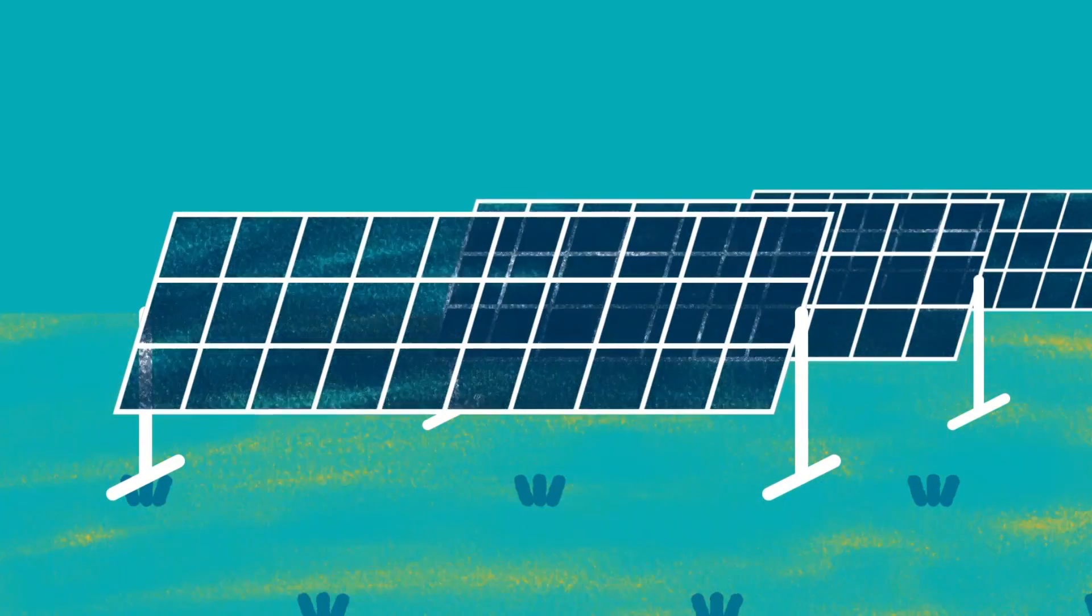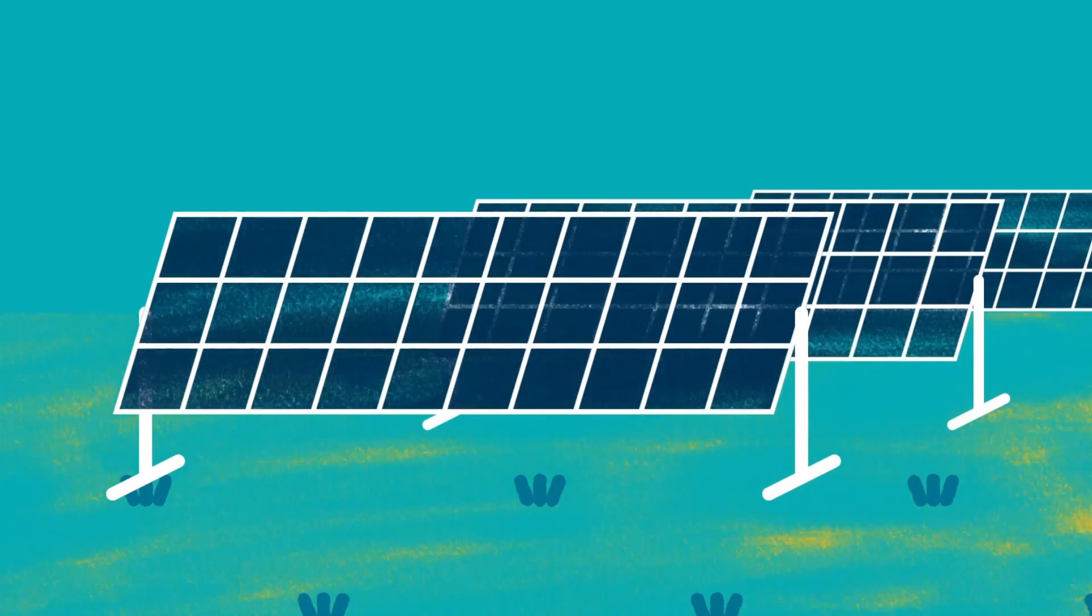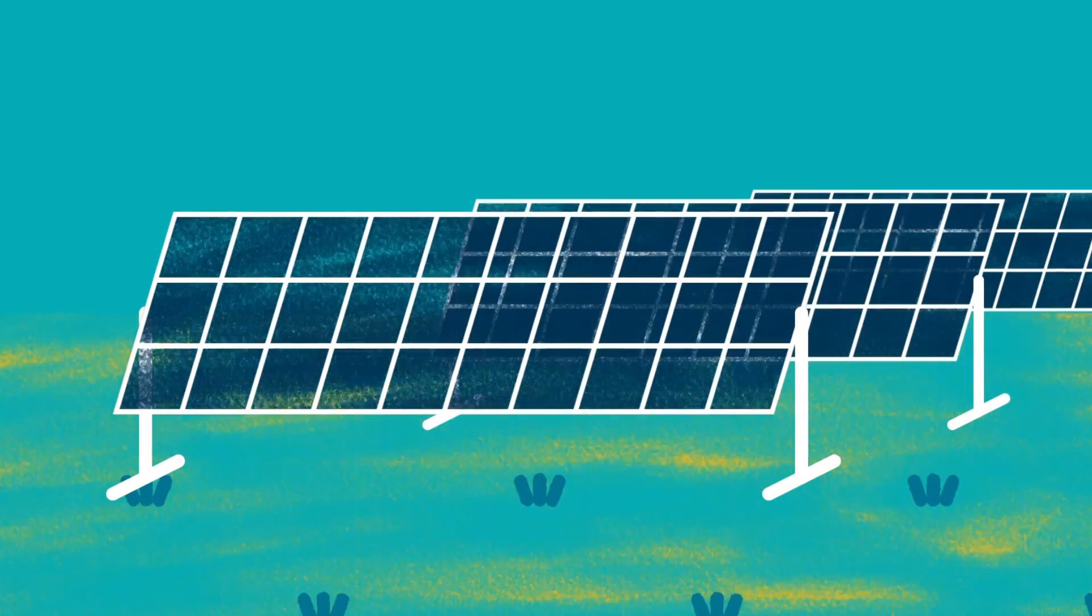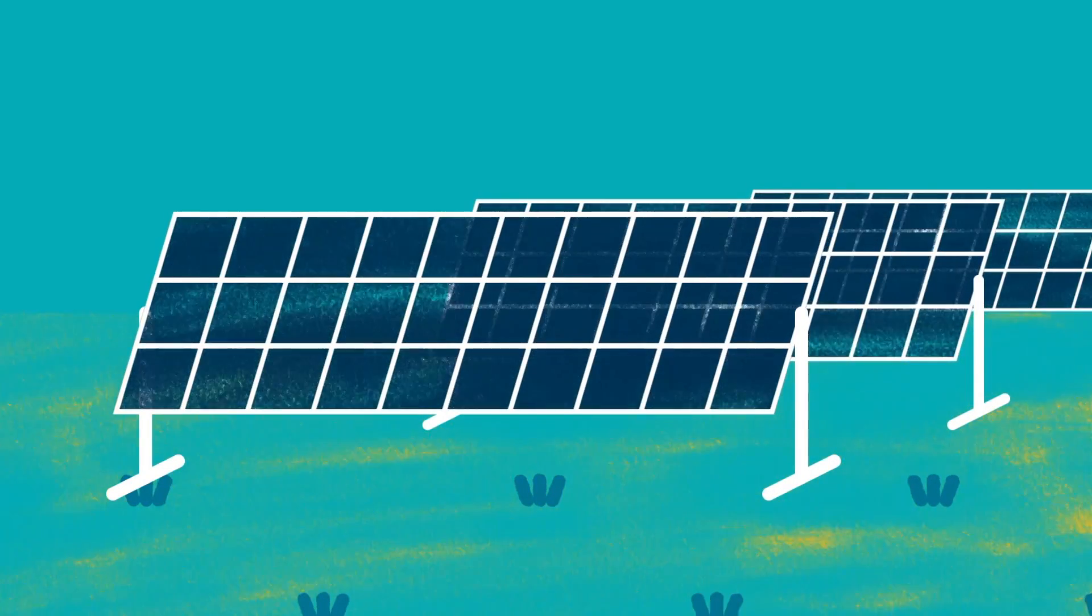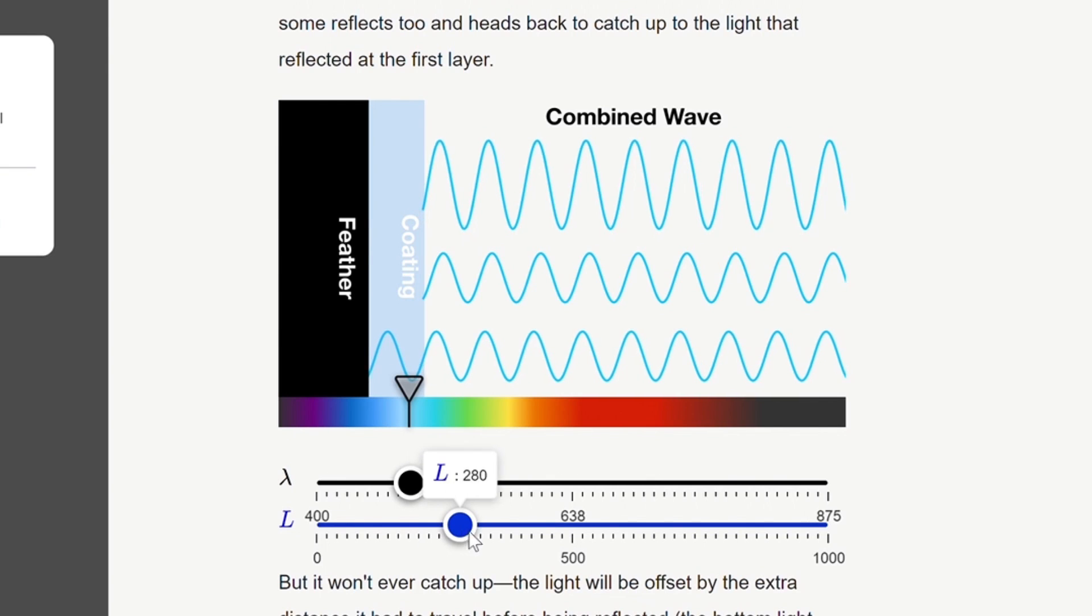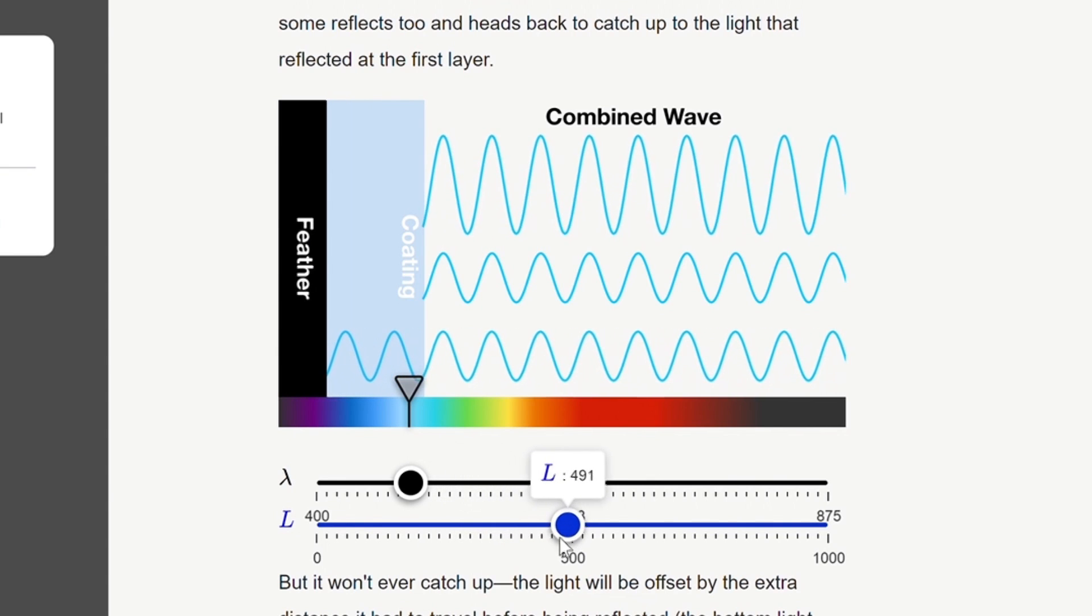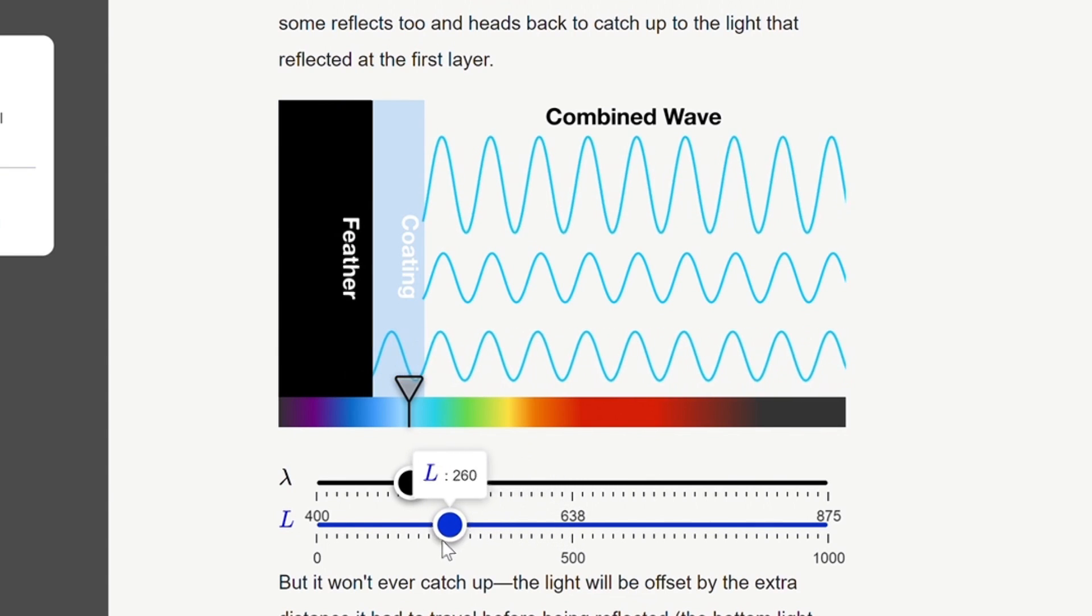In fact, one of the main technologies of solar energy, solar panels, use the same physics of structural color we find in Bernard and Peacocks. By engineering the thickness of the glass layer, we can control what colors of light are reflected and absorbed, just like Bernard.